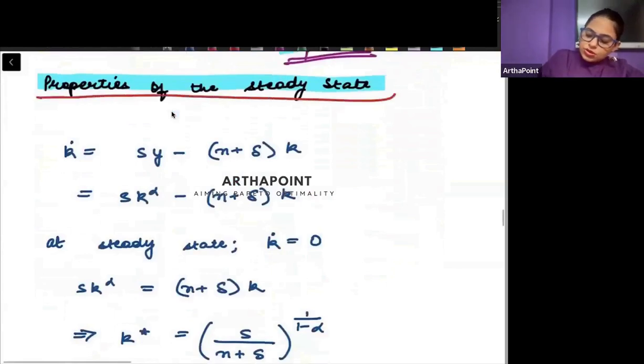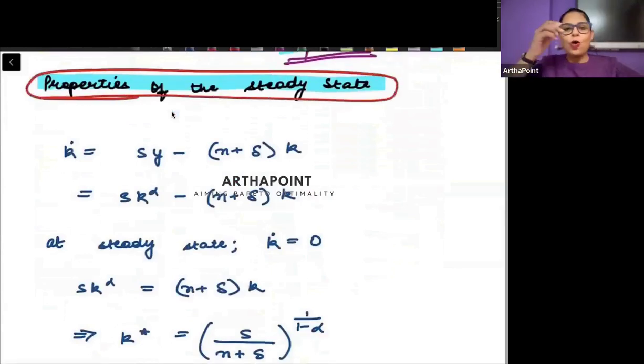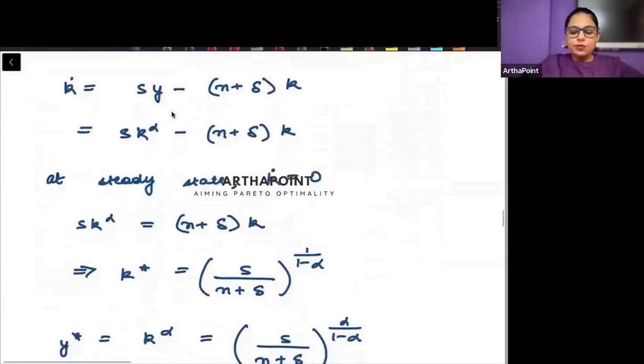Now, let us go towards the properties of the steady state. So, what is steady state? How did we define steady state? We already have done this. Steady state was defined where change in per capita capital was 0.